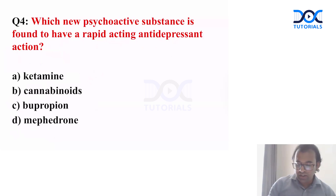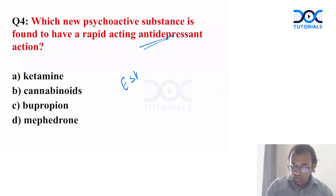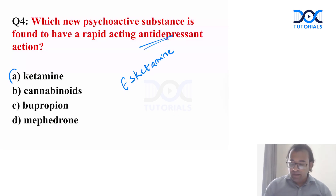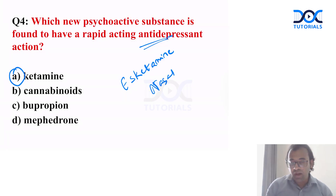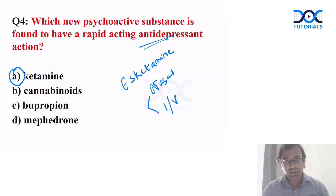Next question: which new psychoactive substance is found to have a rapid antidepressant action? For resistant depression, we can use a nasal spray of esketamine. Esketamine is an enantiomer of ketamine and is given through the nasal route. There is a risk of dependency, so it is given in front of the doctor, once weekly. It can also be given through the IV route — it is the only antidepressant that can be given IV and has the fastest/rapid action. So the answer is esketamine.